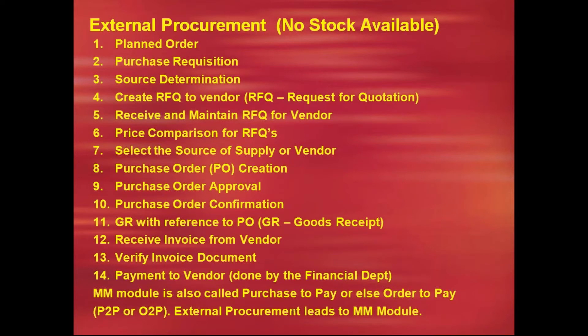The first case: no stock available. The customer has placed an order but the company doesn't have stocks of the raw materials. Then the company goes for planning and an order is called a planned order. Since there are no internal stocks, the company needs to purchase — the document is called a Purchase Requisition (PR). We then need to find the source — that is source determination or vendor determination.